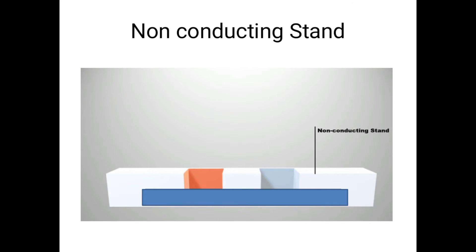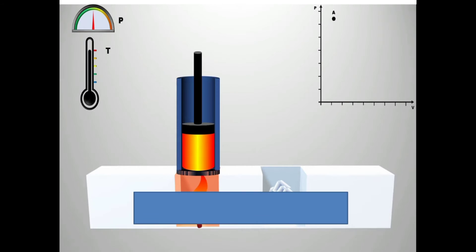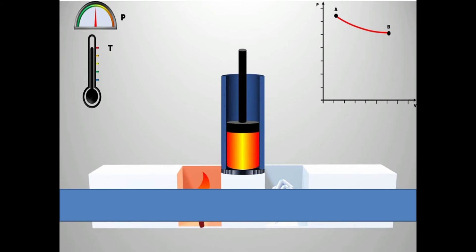Now we come to the practical example of the Carnot cycle. We have a piston-cylinder with gas inside, along with a hot reservoir and a cold reservoir. When we place the cylinder on the hot reservoir, the gas expands — this is called isothermal expansion, meaning it happens at constant temperature. Then we place it on an insulating, non-conducting surface, and there is still some expansion called adiabatic expansion, because no heat transfer is involved.